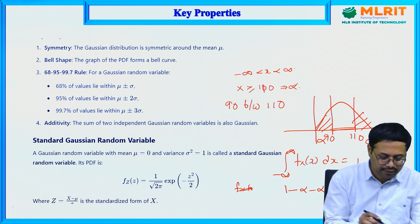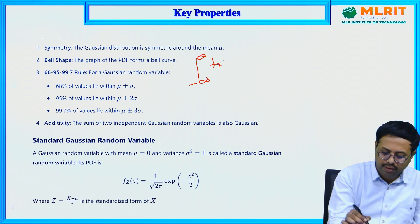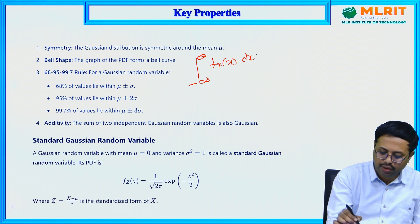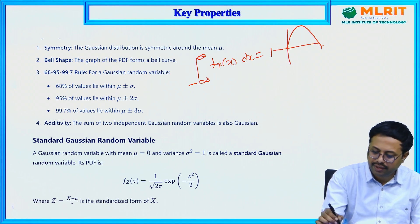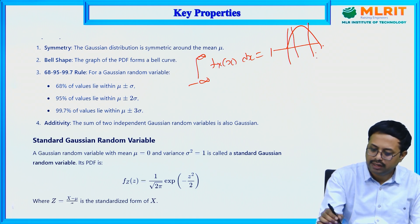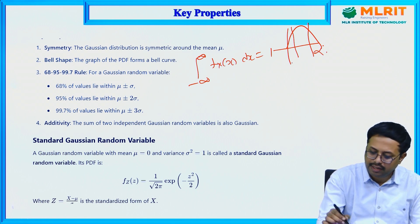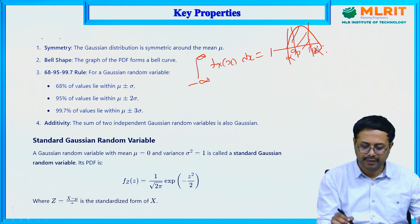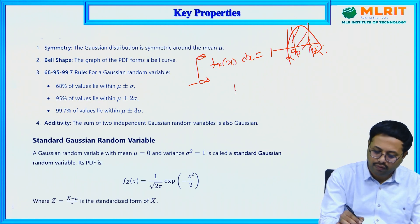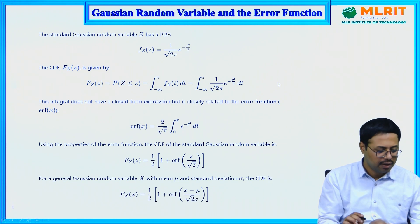To summarize: the total area under the Gaussian curve equals 1. With alpha on each tail, the probability for the interval 90 to 110 is 1 minus 2α. This uses the symmetry of the Gaussian distribution.